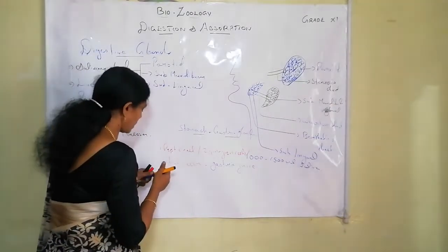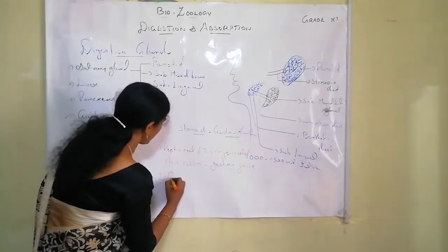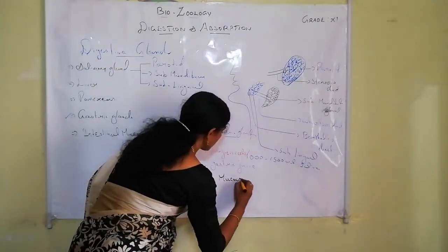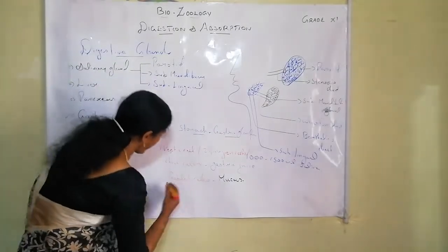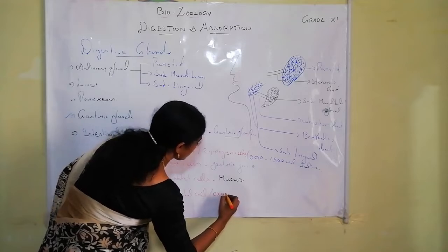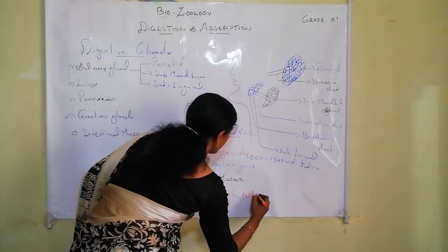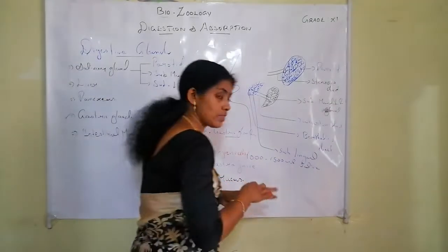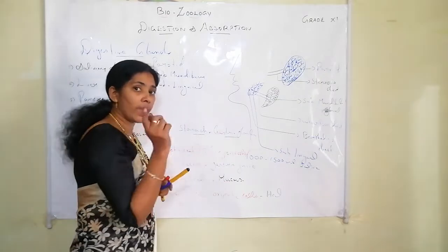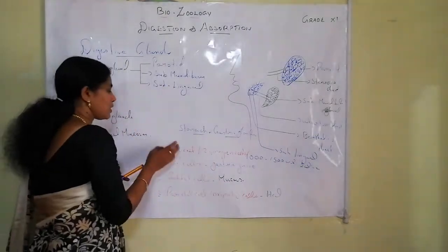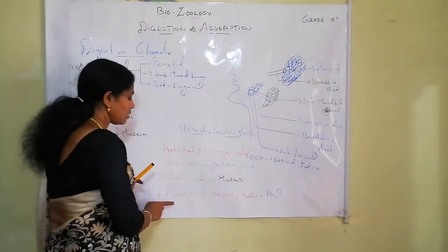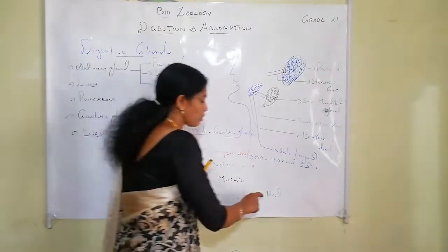The second cell type is goblet cells, which secrete mucus. The third cell type is parietal cells, also known as oxyntic cells, which produce hydrochloric acid.